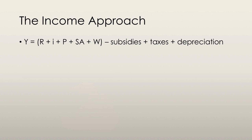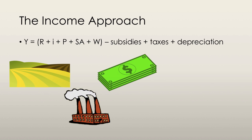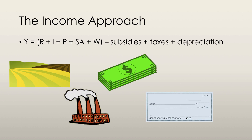We also have the income approach of measuring GDP. There's an acronym called RIPSAW. The R stands for rent, the I stands for interest, the P stands for profits, and the W stands for wages.